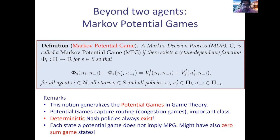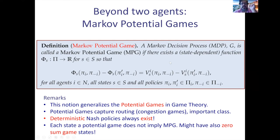However, φ is highly non-concave — there is no way to find the global maximum efficiently; it's NP-hard. Potential games are an important class of games capturing routing games, congestion games. Moreover, not only does the Nash policy always exist in Markov potential games, but it's also true that there always exists a Nash policy that is deterministic.